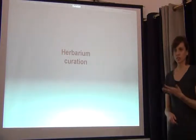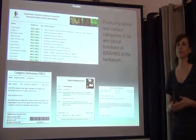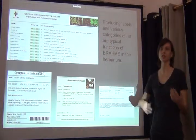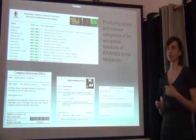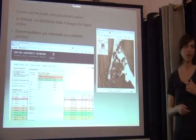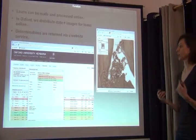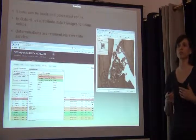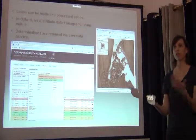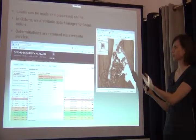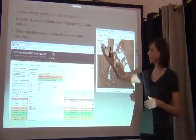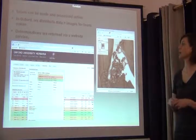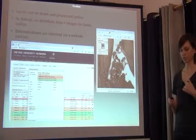Brahms is also a collections management tool. If you need to create inventories of your specimens, produce reports, labels, or anything to manage your collection, it's a very good tool for that. You can track loans, create online loans — if someone has requested specimens and you can't ship them, you can digitize them and put them online. Determinations can be returned, so if someone is validating a record they can return a determination via a website service.